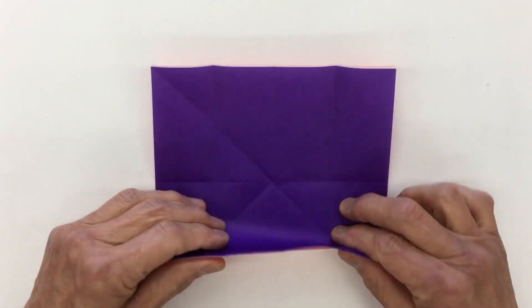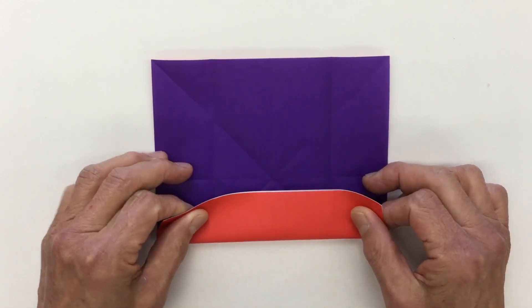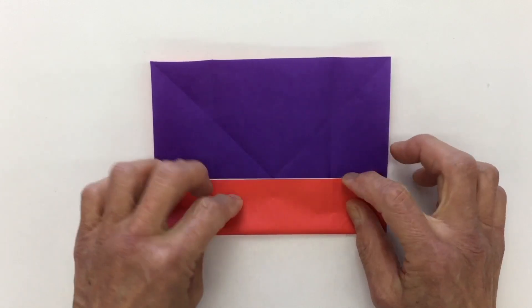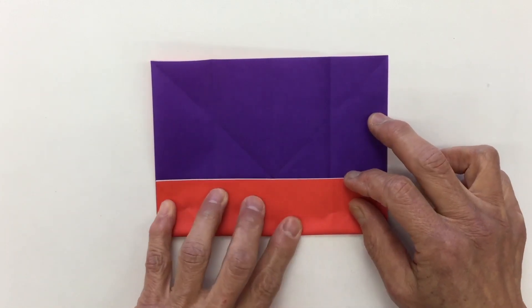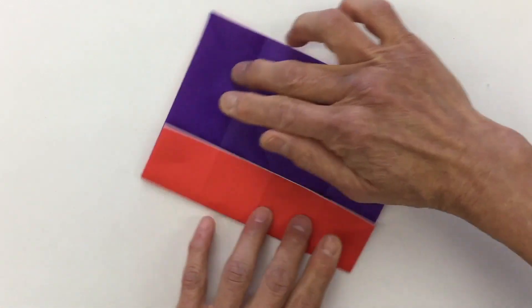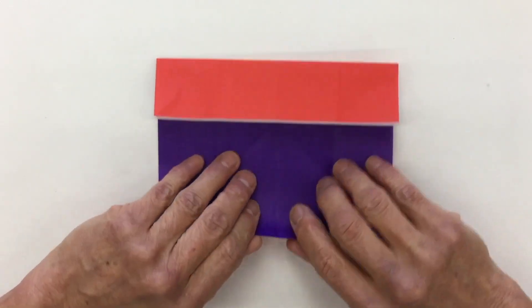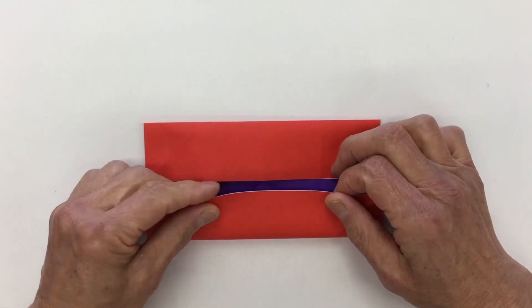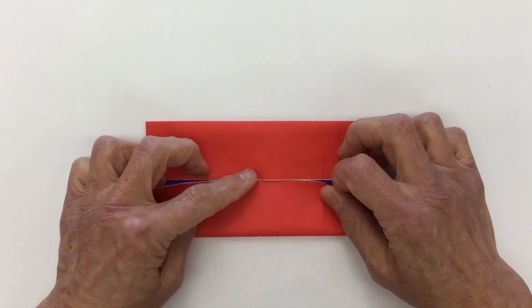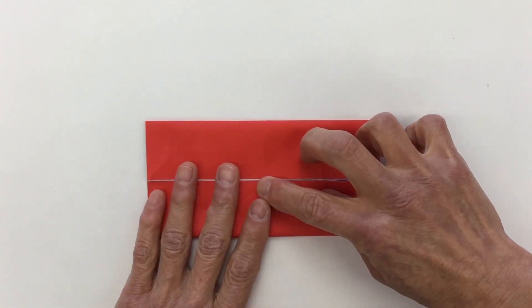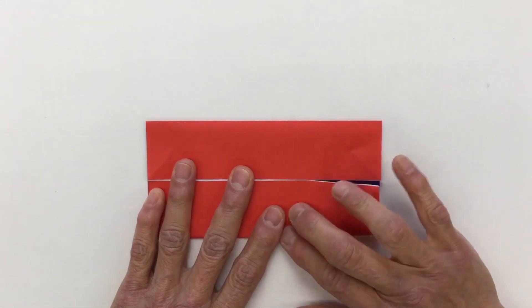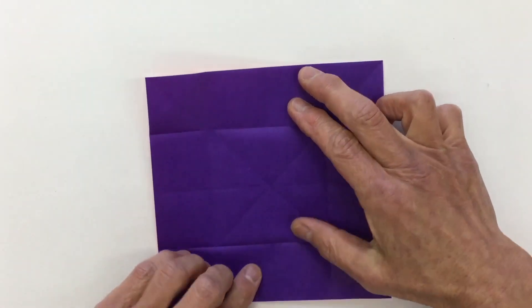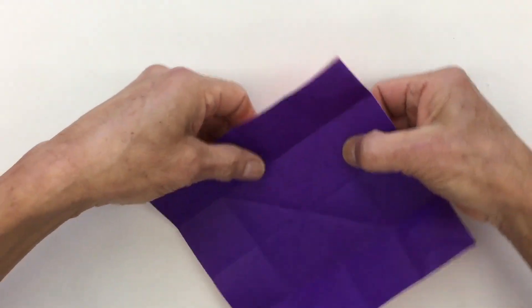Shift. These next two folds are the same. Same folds in the other direction. Bring it to the center crease there. Hold in place. And crease. Shift. Have these edges just touching, not overlapping. Hold in place and crease. Open. Now, flip everything over.